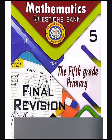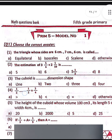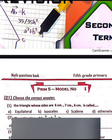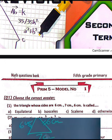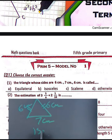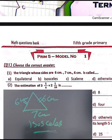From the Qahliya government, this is second term. Look at model number one, choose the correct answer. Question number one: the triangle whose sides are 6 cm, 7 cm, and 6 cm is called an isosceles triangle. We have two sides equal in length — 6 cm and 6 cm — so we call it an isosceles triangle. Choose letter B because we have two equal sides.